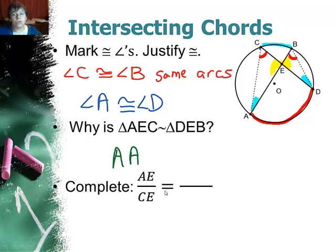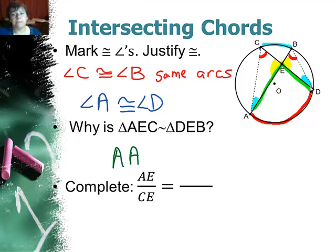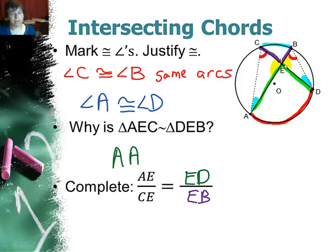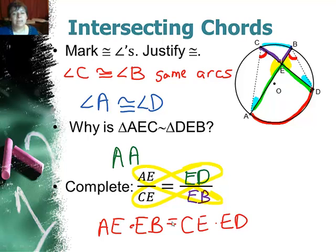Now I'll set up a proportion using the similar triangles. AE corresponds to ED on the other triangle — the blue angle to the yellow angle matches the blue angle to the yellow angle. CE corresponds to EB — the red to the yellow matches the red to the yellow. Cross-multiplying gives AE times EB equals CE times ED. The product of the pieces of one chord equals the product of the pieces of the other.